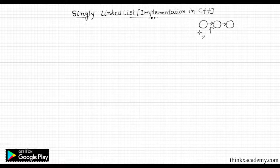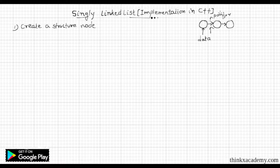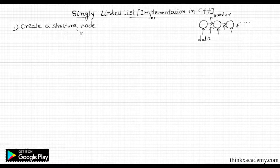The first step is to create a structure node. This structure node will contain two parts: one is the data, and the second part is the pointer. Whenever we want to create a new node, we will create a structure node which has data and a pointer, and so on.